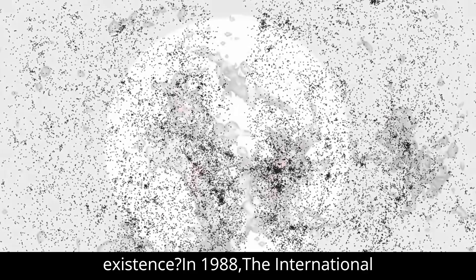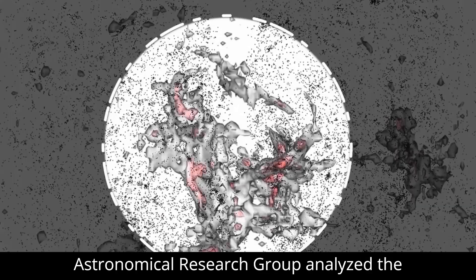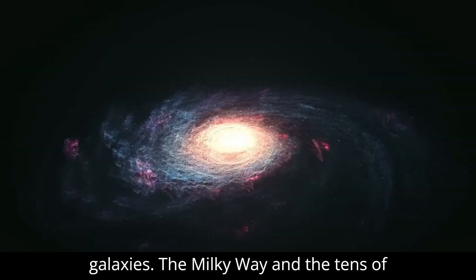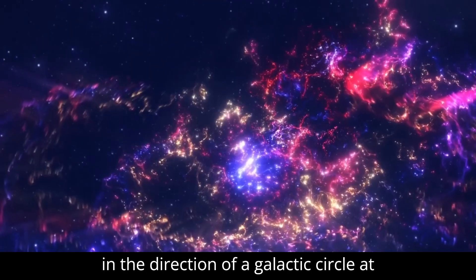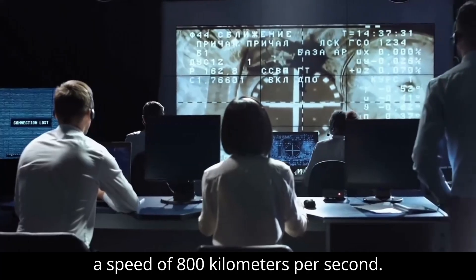In 1988, the International Astronomical Research Group analyzed the observational results of 400 near-Earth galaxies. The Milky Way and tens of thousands of galaxies near it are moving in the direction of a galactic circle at a speed of 800 kilometers per second.